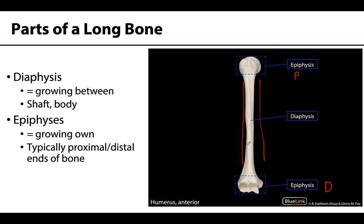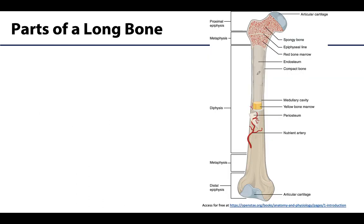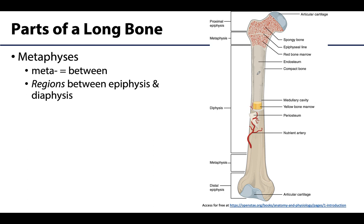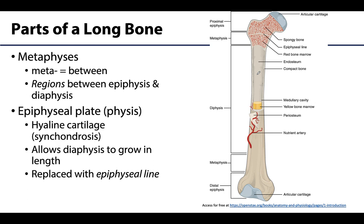The epiphyses are the ends of the long bone — typically there are two, a proximal and a distal, but there can be more in certain bones. They are composed of mostly spongy bone but always with a thin layer of compact bone on the very outer border. The area between the diaphysis and the epiphysis is the metaphysis, which is well-named because 'meta' means between, so this is between the epiphysis and the diaphysis, with one on either end of the bone.